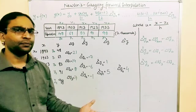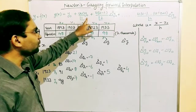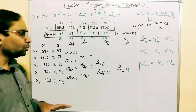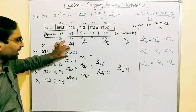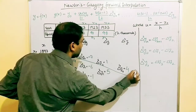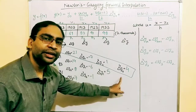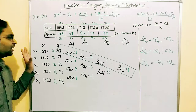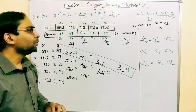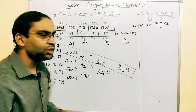You can pause and repeat the video to understand the construction of this table. Now in the Newton's Gregory Forward formula, we need to substitute y0, Δy0, Δ²y0, Δ³y0, and Δ⁴y0 — that is all the values along the top diagonal row of the forward difference table. Our required values are: y0, Δy0, Δ²y0, Δ³y0, and Δ⁴y0.